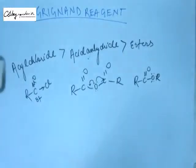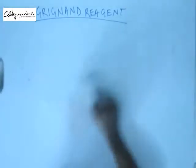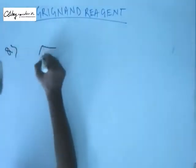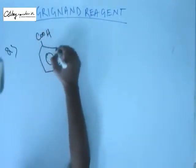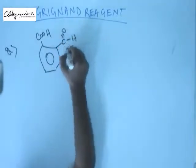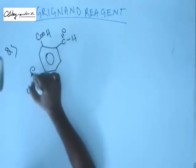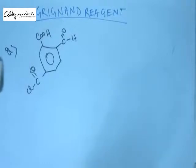So this will be the reactivity order. Now they can ask you problems on this concept. Suppose I have a substrate with three groups attached to a benzene ring: a carboxylic acid group, an aldehyde group, and an acyl chloride group.